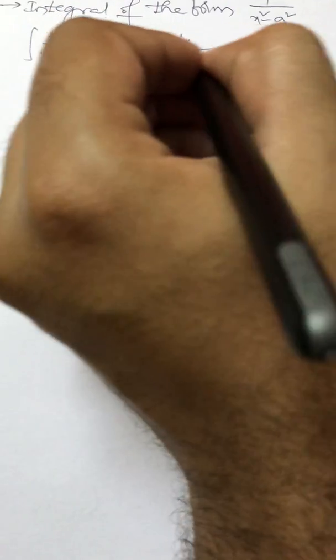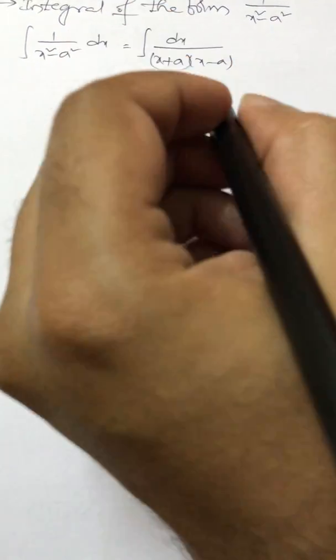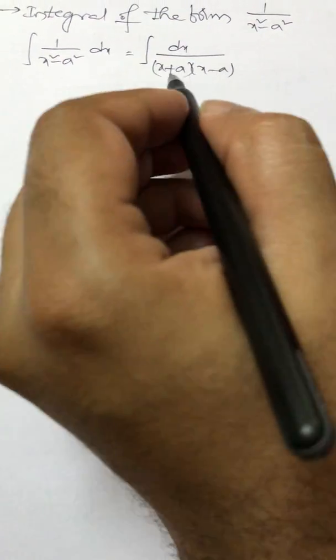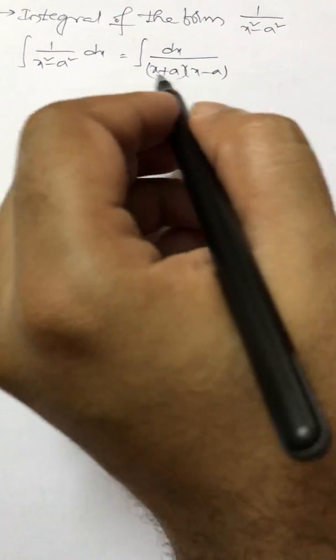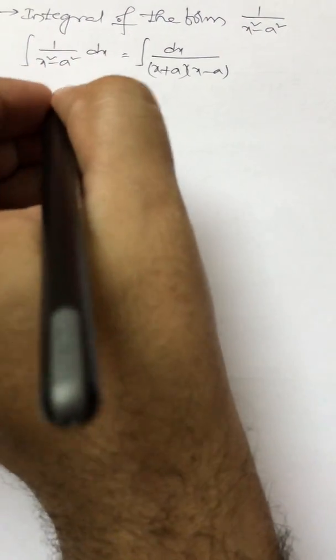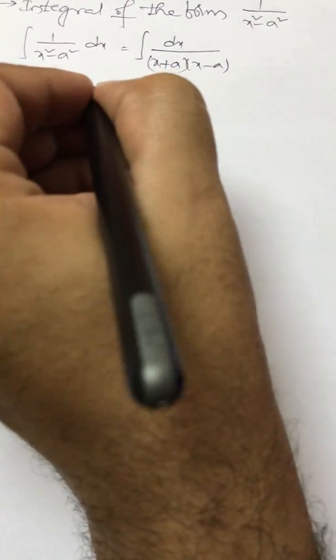So the denominator can be written as x plus a into x minus a. So if I see the difference of these two, I will get 2a. So multiply and divide by 2a.